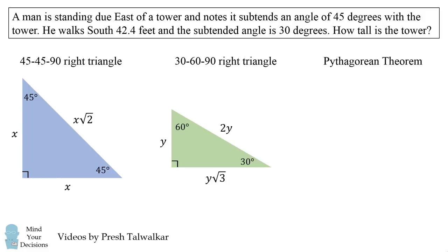Finally, we'll use the Pythagorean theorem. If we have a right triangle with legs of a and b, then its hypotenuse will be the square root of the quantity a squared plus b squared.